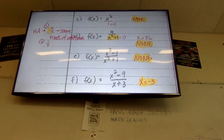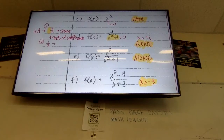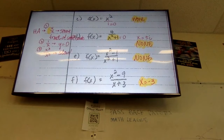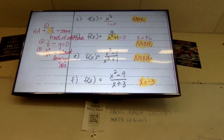Another option is the exponent on top is smaller than the one on bottom — like 1 over x. This is a memorized thing: no matter what the constants are, this is always y equals zero. So if the exponent on bottom is bigger, the asymptote is y equals zero. The last option is if the exponent on top is bigger than the one on bottom — that's a slant asymptote, and we need long or synthetic division for that, which we'll save for chapter two.